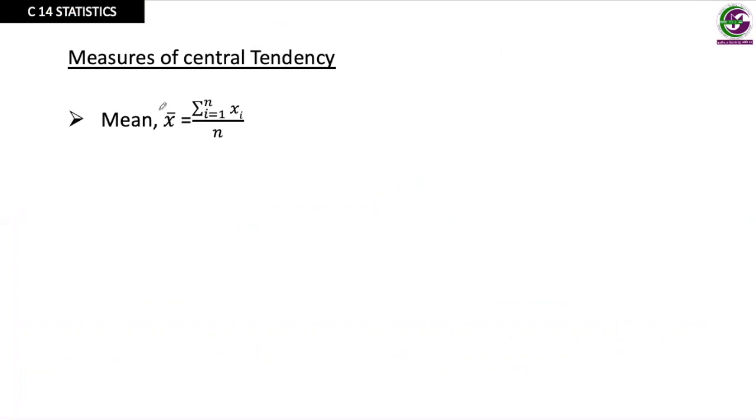Mean is represented by the symbol X bar and is written as a formula sigma. We call it sigma or summation. Sigma i equals 1 to n of xi means we add all the values given to us divided by total number of observations. Let us see an example. If you want to find the mean, X bar equals 2 plus 3 plus 4 plus 5 plus 0 plus 1 plus 3 plus 3 plus 4 plus 3 all divided by how many values we have. We calculate the value to get the mean of this data.